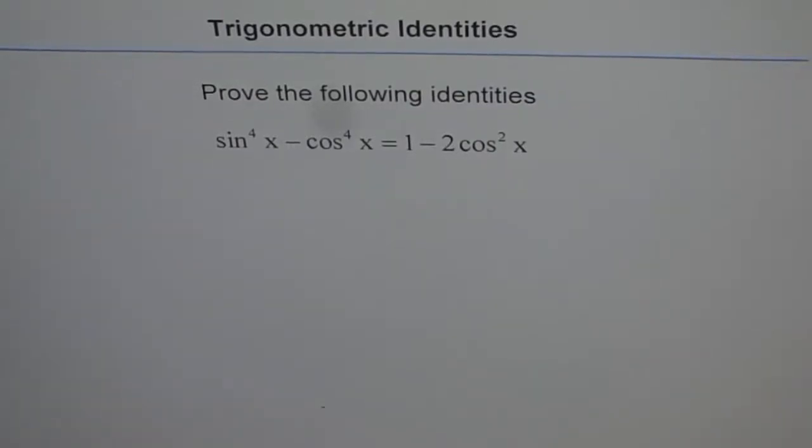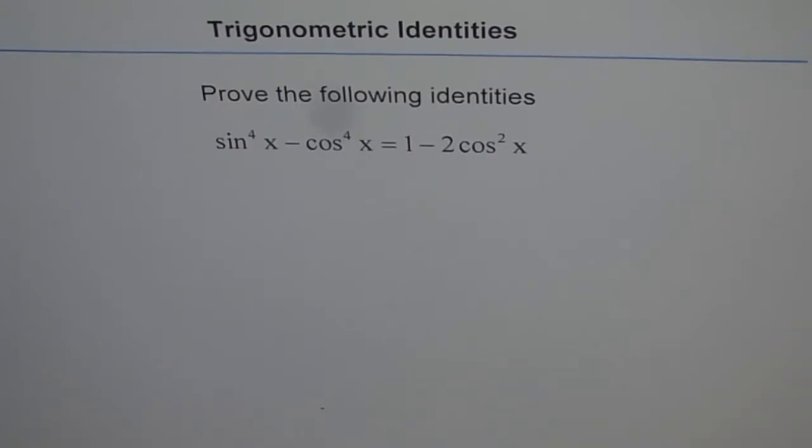So here we have a trigonometric identity to prove which is sin^4x - cos^4x = 1 - 2cos^2x.